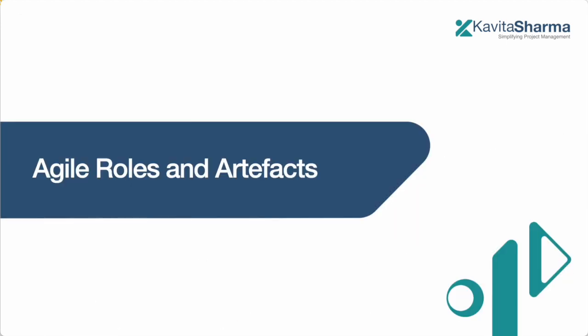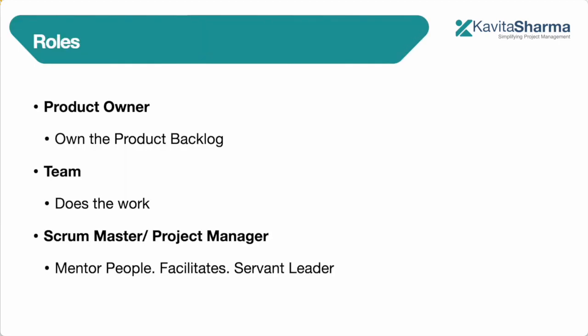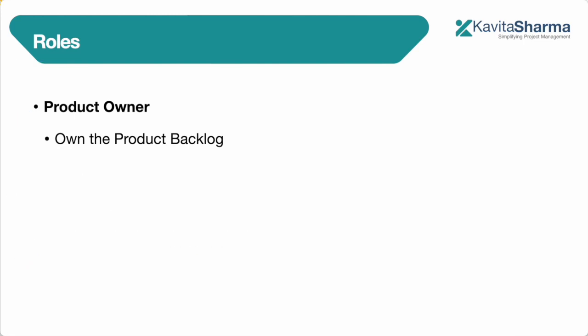So let's look at some of the roles and artifacts typically used in most of the agile methodology. The methodology which is picked up here is Scrum, which is used by many organizations. 80% of the organization when they use Agile, they are actually talking about Scrum or the methods which are based on Scrum. So there are three roles in agile projects. One is product owner. The second role is team. And third role is Scrum Master or project manager.